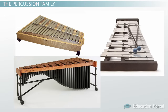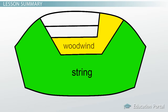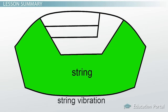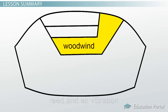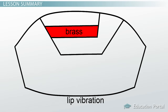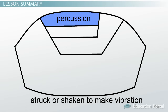Most of the time percussion instruments play a supporting role, though bells and xylophone occasionally get the melody. To summarize: the four families of the orchestra are the string, woodwind, brass, and percussion families. The string family uses string vibration, the woodwind family uses reed and air vibration, the brass family uses lip vibration, and the percussion family contains instruments that are struck or shaken to make vibration.